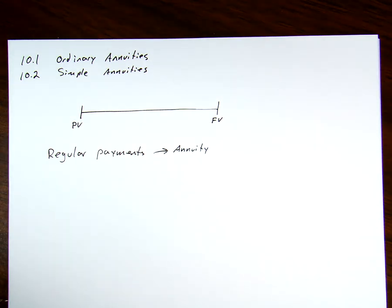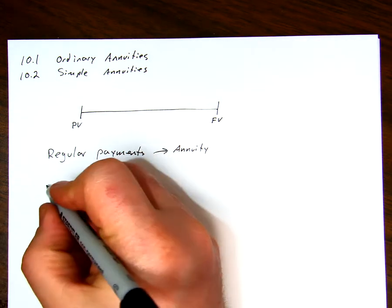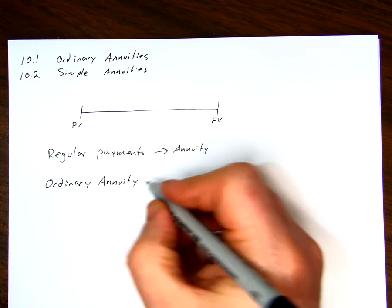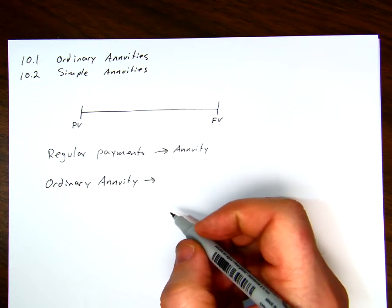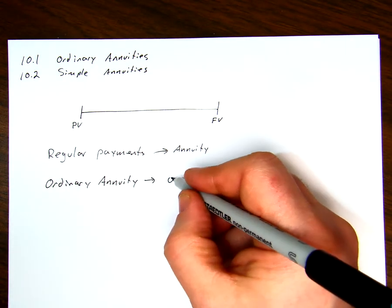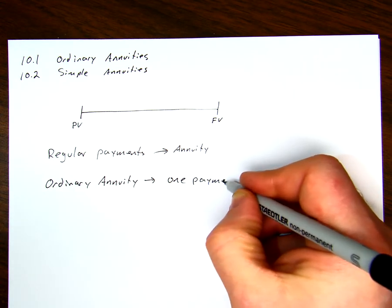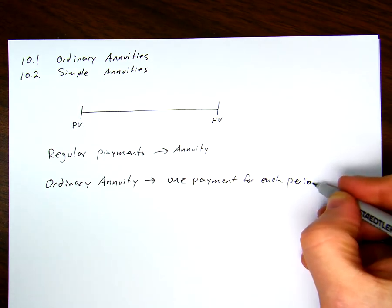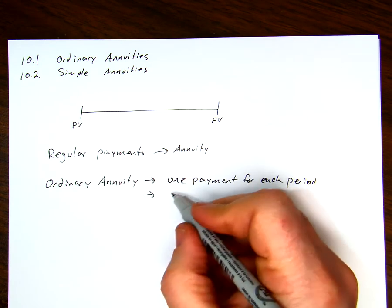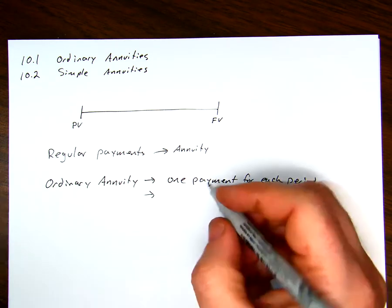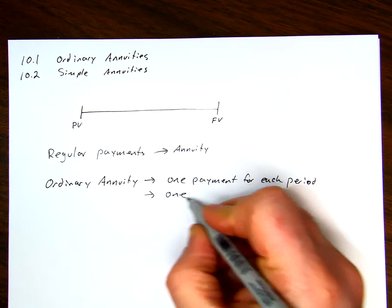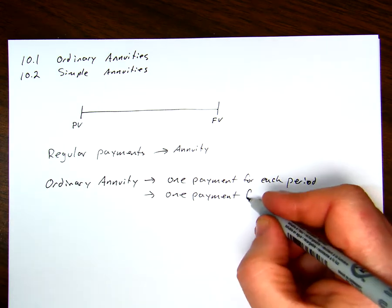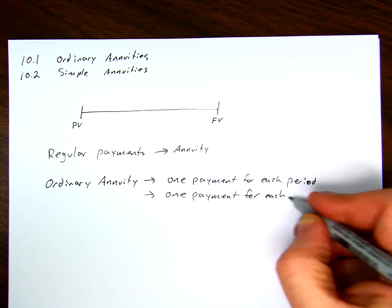To start off, what we're looking at is an ordinary annuity. What we say here is we have one payment for each period, and we also have the same compounding frequency. So we say we have one payment for each compounding period.